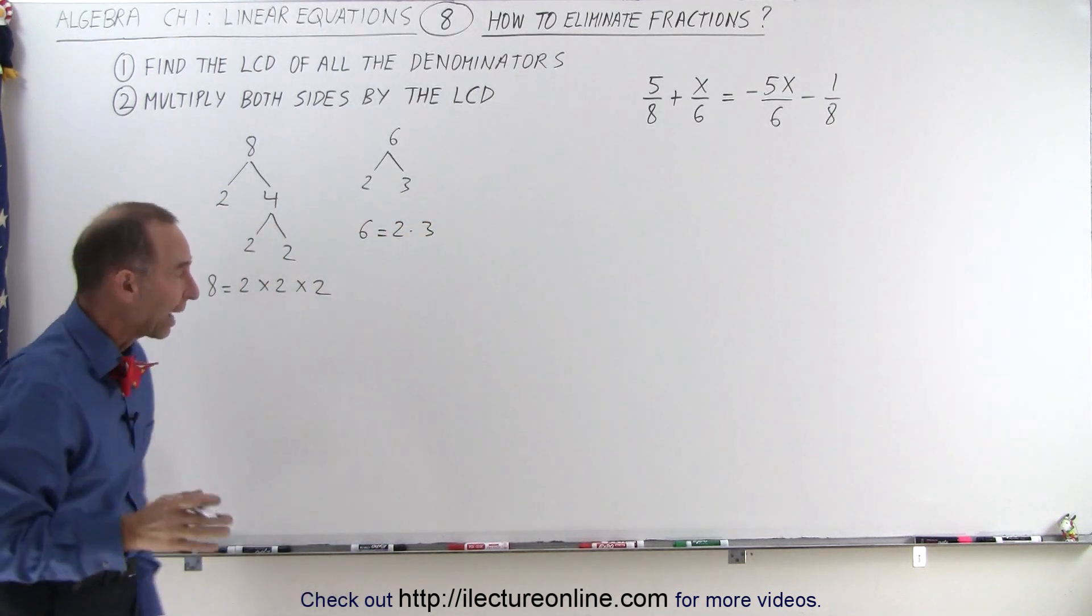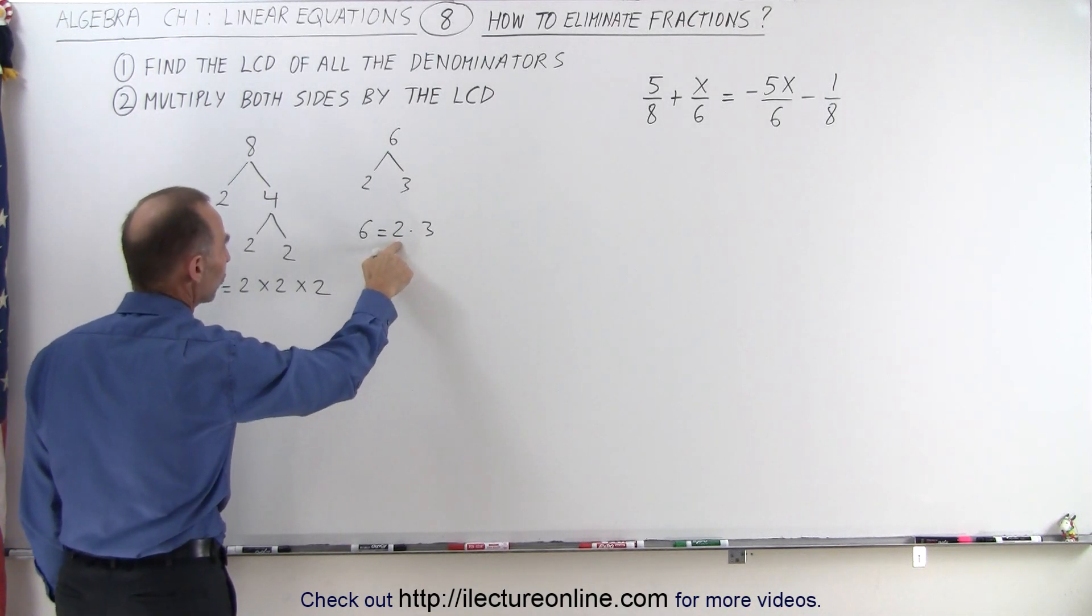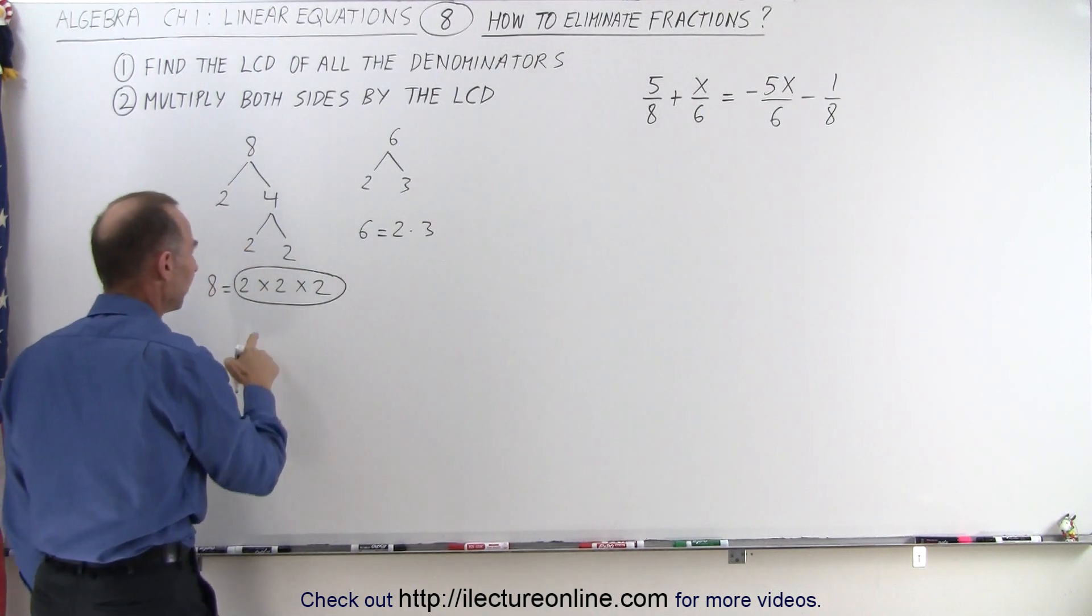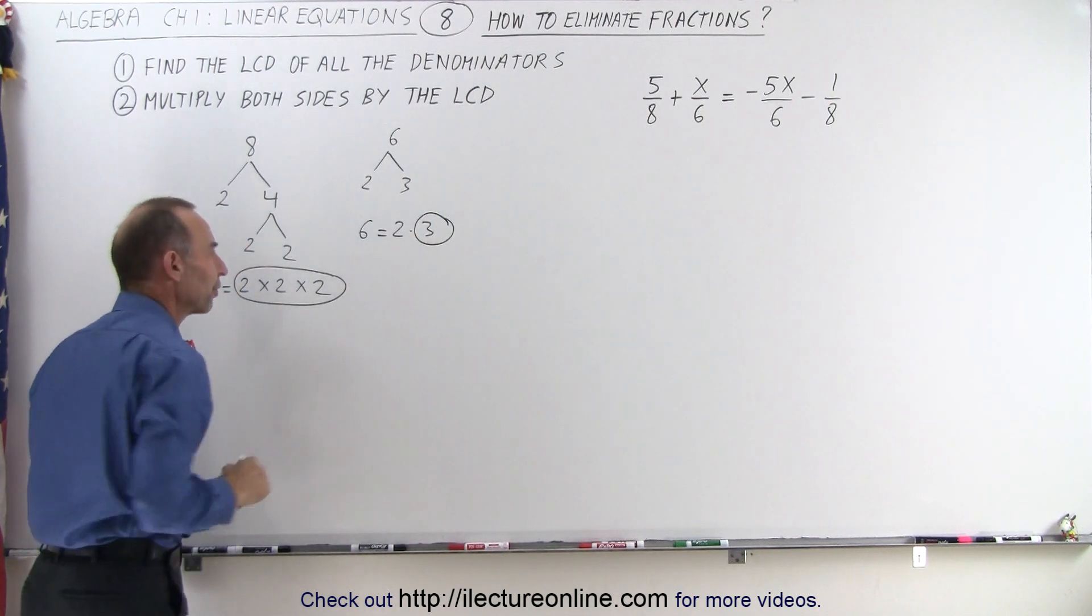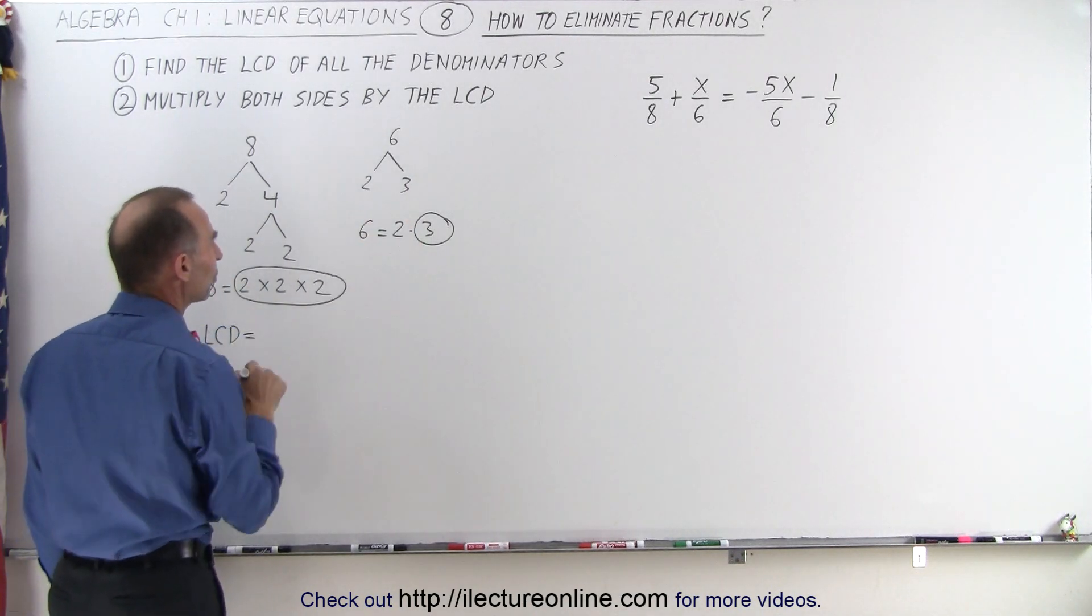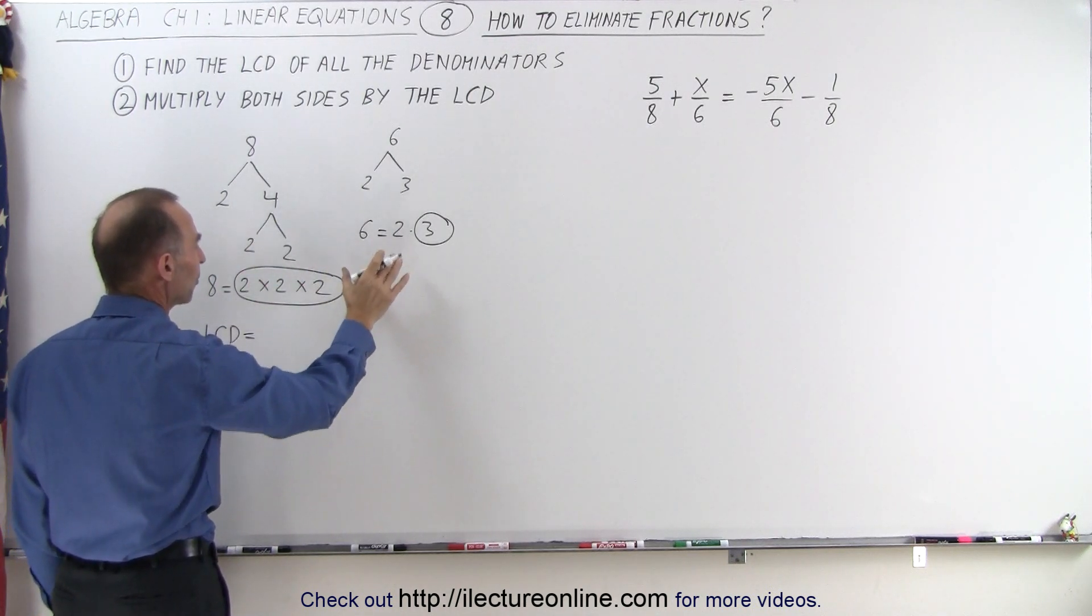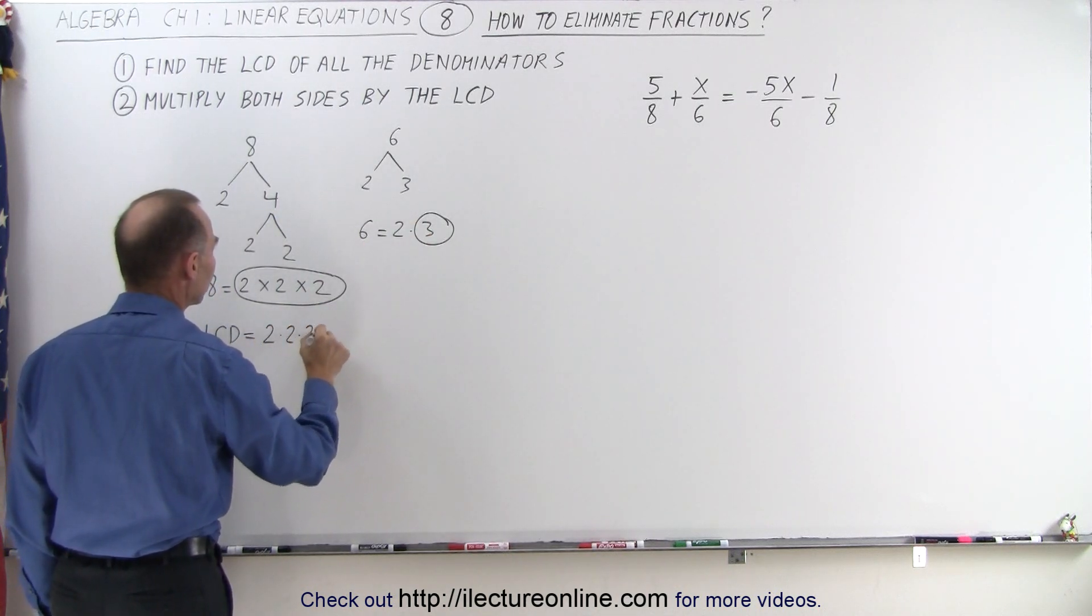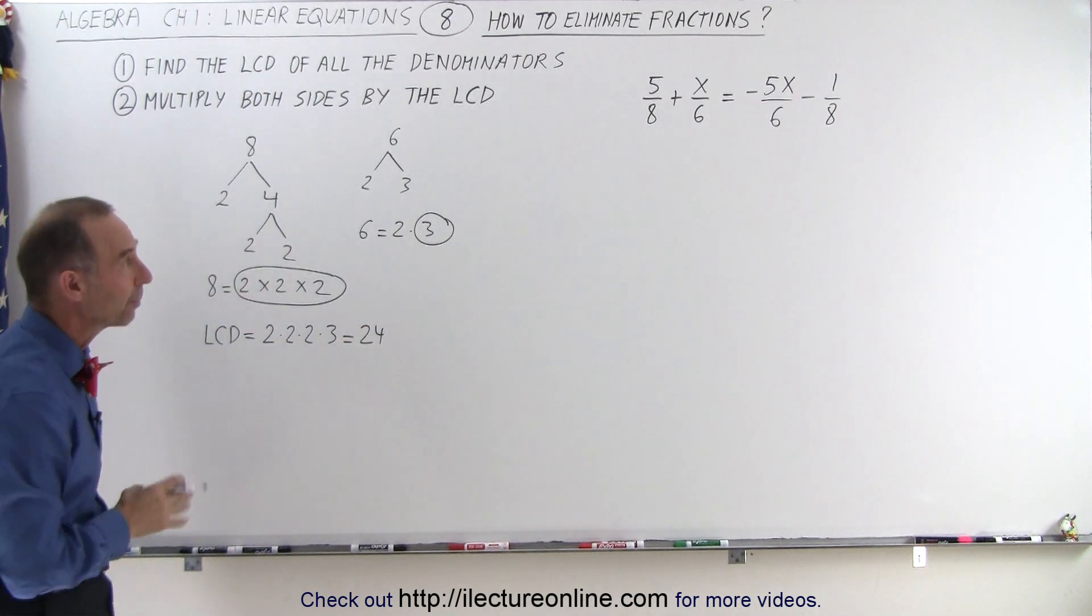Now we look at each of the factors. We notice that the factor 2 appears three times, and the factor 2 here appears once. So we take the number of times that 2 appears the most in any of the numbers. We also see that the factor 3 appears once here, but does not appear over here. The lowest common denominator is equal to the product of all the factors that we circled. We find the greatest number of times that each of the factors appears, circle that, and multiply them all together. This becomes 2 times 2 times 2 times 3, which is 24, and that becomes the lowest common denominator.